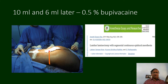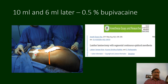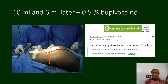Even though laminectomy looks like a lumbar procedure, sometimes the incision site may be at T11-T12-L1. For such cases I put the catheter at T9-T10 and gave 10 ml so that the laminectomy could be completed — this is segmental continuous lumbar epidural.